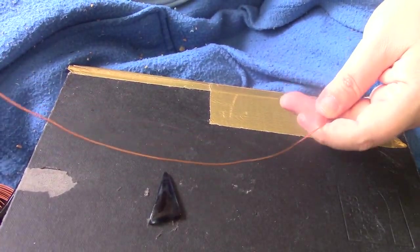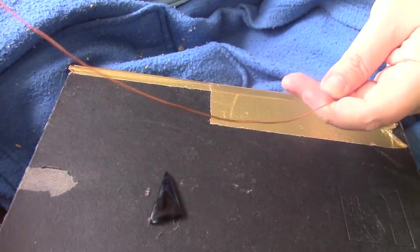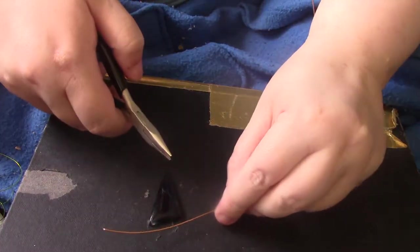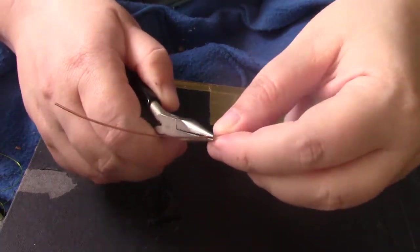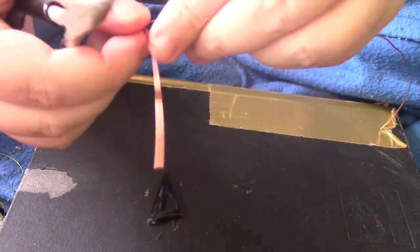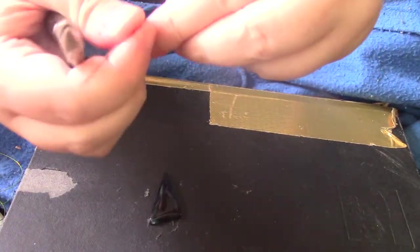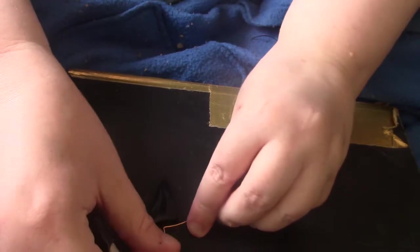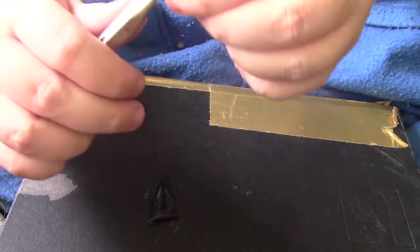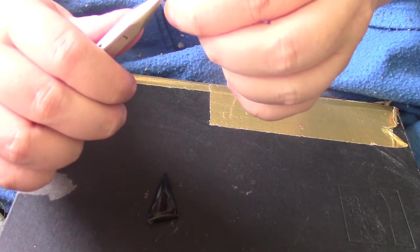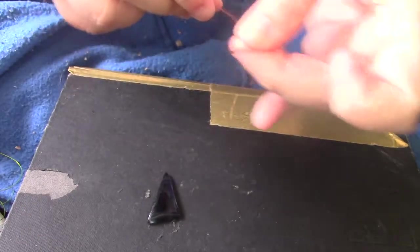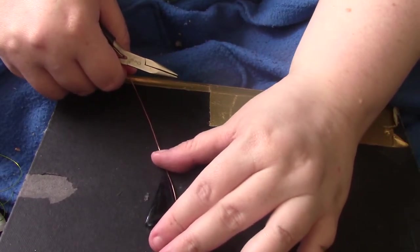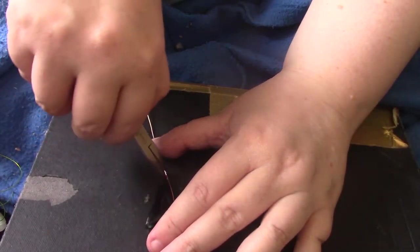And now I'm going to take my chain nose pliers and I'm going to make a series of 90 degree bends like this. Because I'm going to be making a square, well, rectangular-ish frame to go around this. One thing that's a bit challenging is keeping it all on the same plane.